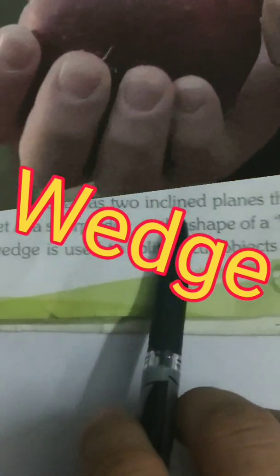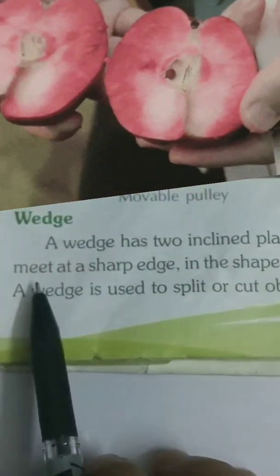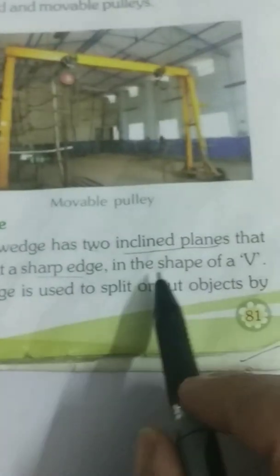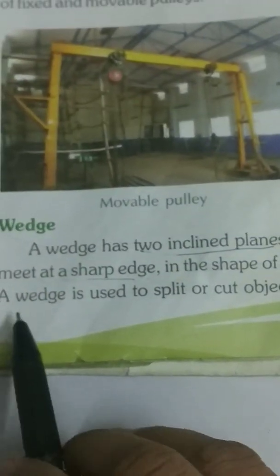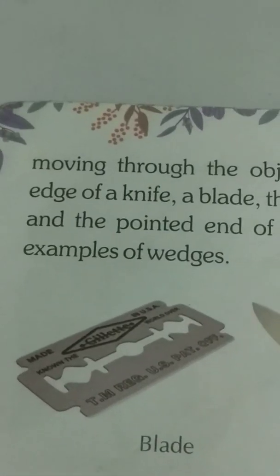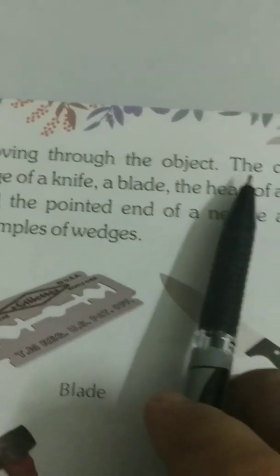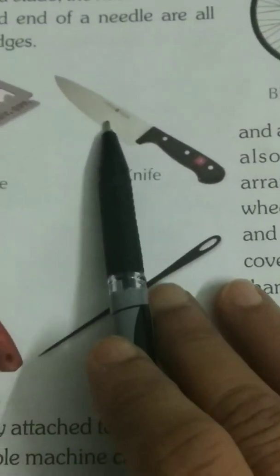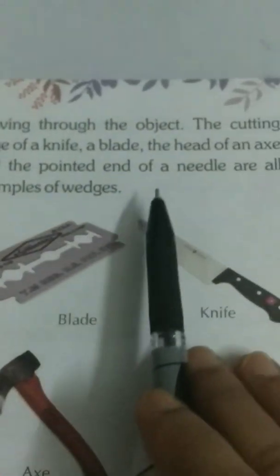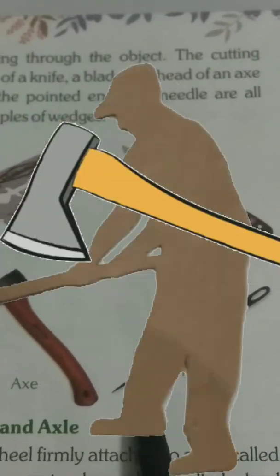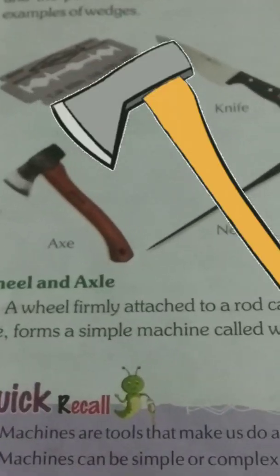Wedge: a wedge has two inclined planes that meet at a sharp edge, in the shape of a V. A wedge is used to split or cut objects by moving through the object. Examples include the cutting edge of a knife, a blade, the head of an axe, and the pointed end of a needle. These are all examples of a wedge.